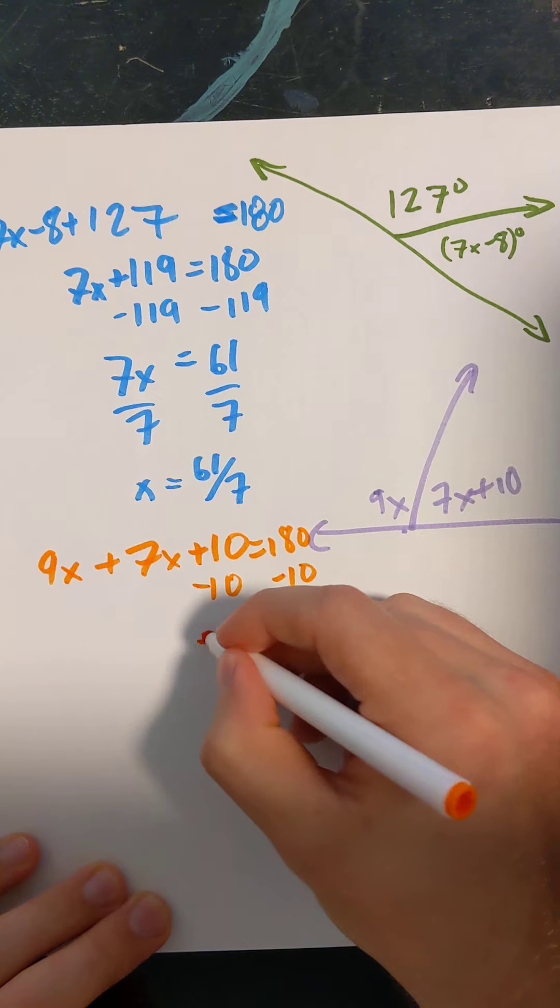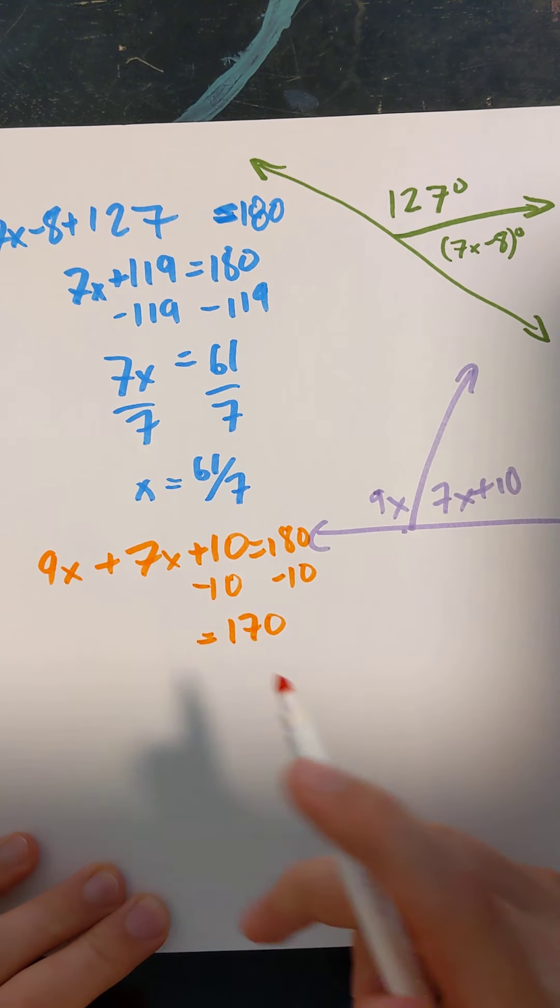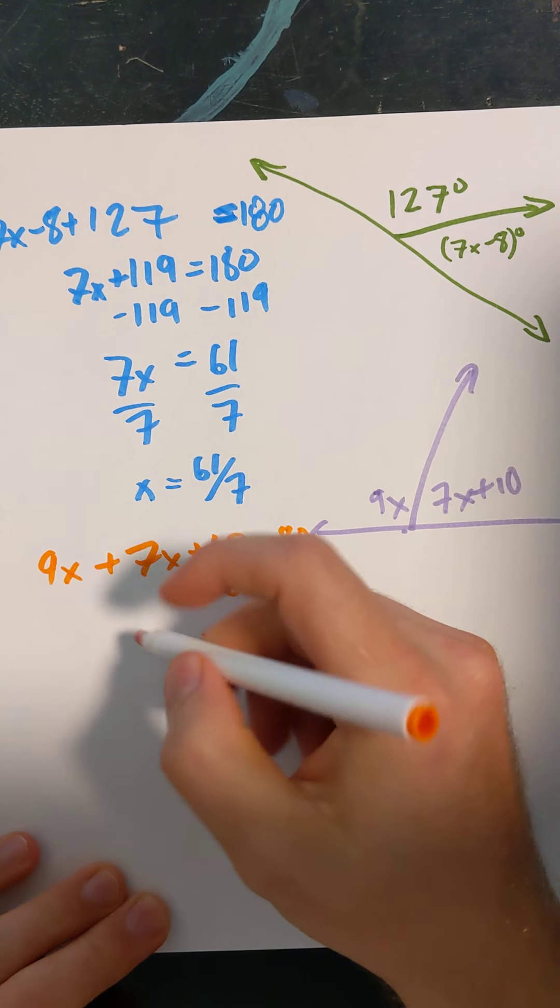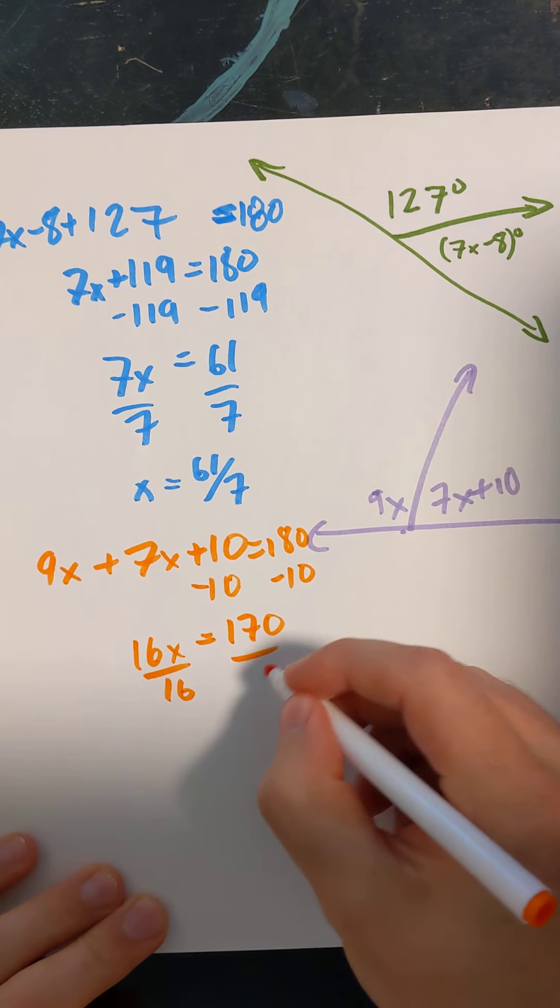Subtract 10 from each side, we've got 170. Oh, and let's go ahead and combine these like terms while we're at it. 9X plus 7X is 16X, so we need to divide by 16 on each side.